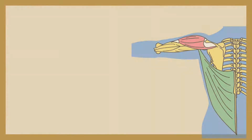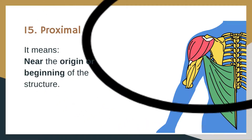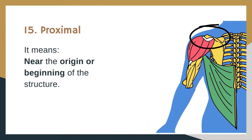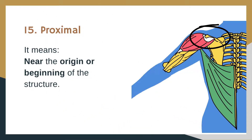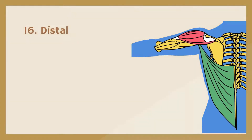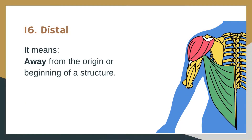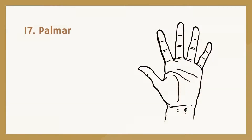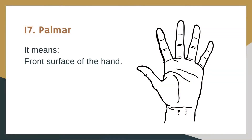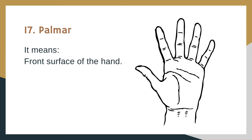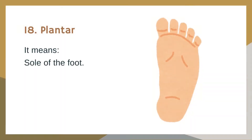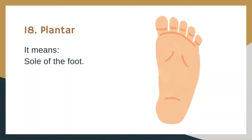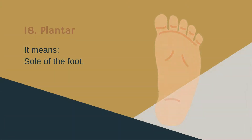Proximal: it means near the origin or beginning of the structure. Distal: it means away from the origin or beginning of a structure. Palmar: it means the front surface of the hand. Plantar: it means the sole of the foot.